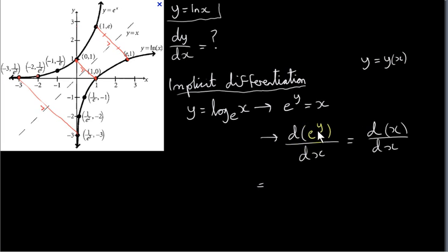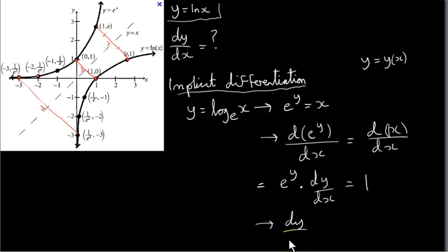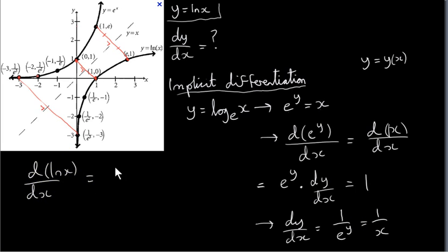When we differentiate e to the power of something, we get that e to the power of something, but by the chain rule we must multiply by the derivative of the power — so we differentiate y with respect to x. The right-hand side: differentiating x with respect to x just gives us 1. So dy/dx equals 1 divided by e to the power of y. But we can express dy/dx as a function of x by realizing that e to the power of y is just x. So the derivative with respect to x of ln of x is 1 over x.